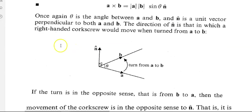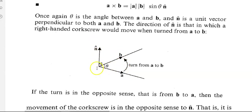It's a bit strange. As you turn from a to b — it's like using a corkscrew — the perpendicular vector m goes in the direction a corkscrew would move. You can see it's perpendicular to both a and b, but it goes in the direction the corkscrew would move.